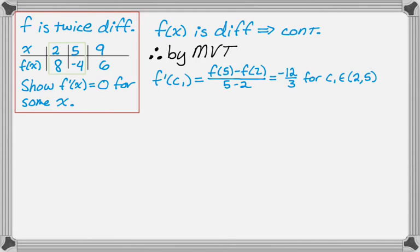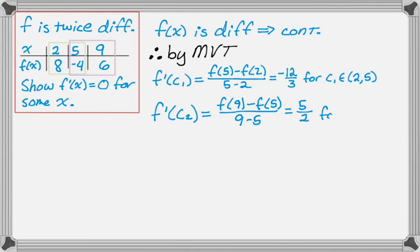And then I'm going to say for some c₁ element of (2, 5). Now I'm going to do it again from 5 to 9. So on the interval from 5 to 9, I'm going to say f'(c₂) is equal to [f(9) - f(5)] / (9 - 5). And that 6 minus negative 4 is 10 over 9 minus 5 is 4, so 10 over 4, which is 5 halves. I chose to simplify that one.